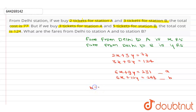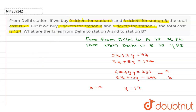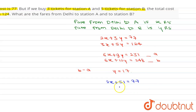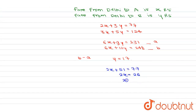Now B minus A: the 6x terms cancel, and 10y minus 9y gives y = 248 minus 231, which equals 17. So y = 17. Substituting y = 17 into the first equation: 2x + 3 × 17 = 77, so 2x + 51 = 77, giving 2x = 26, therefore x = 13.